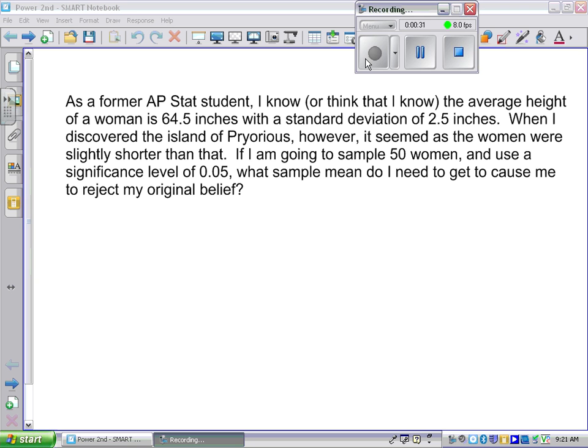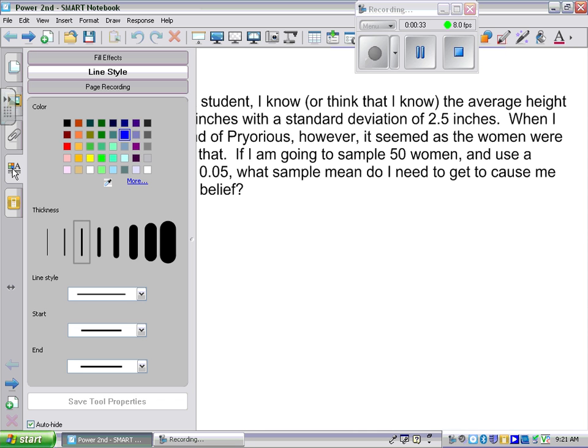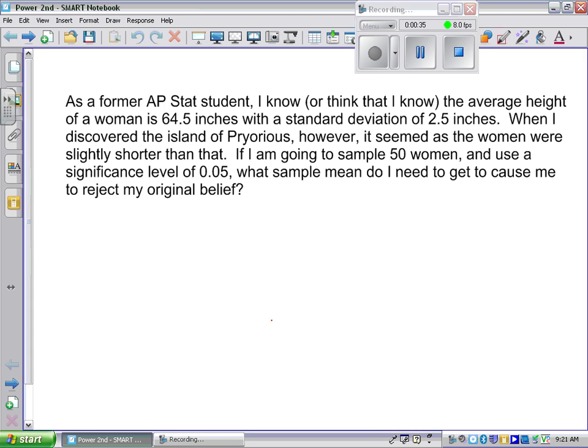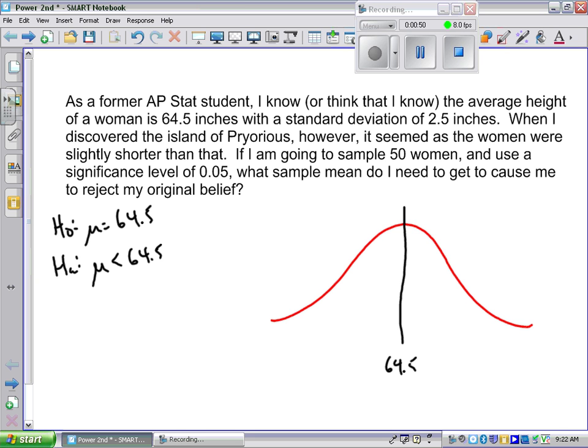We've got a normal curve. The center of that normal curve is 64.5 inches because I'm doing H0: μ = 64.5. HA: μ < 64.5, and it's less than because we're testing a shorter hypothesis.